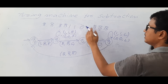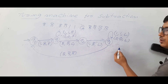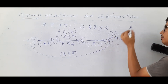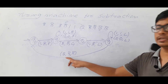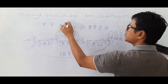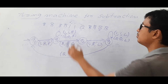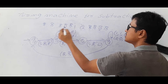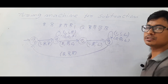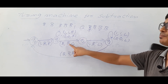Again in state q2, if I find a 1 I make it a blank and move to the left. If I see a 0 I keep it as 0 and move left; if it's a 1 I keep it as 1 and move left. When I see a blank I keep it as a blank and move to the right, reaching state q0. In q0 if it is a 1 I make it a blank and move right, continuing the process.